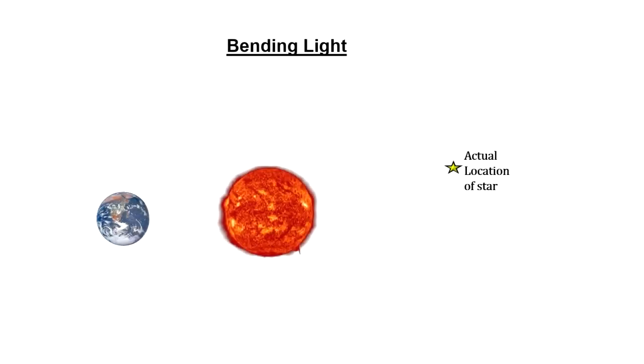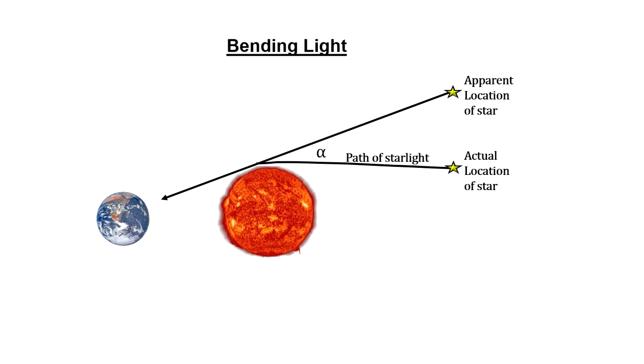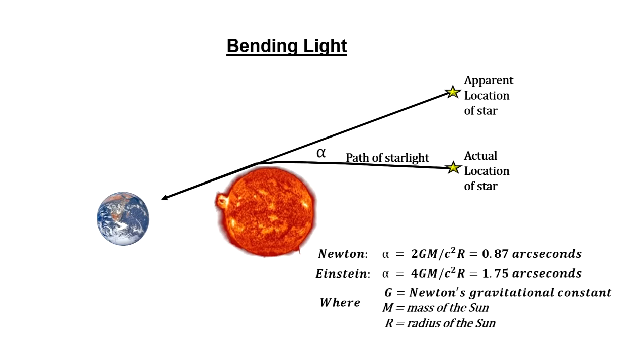When light comes close to the Sun, the Sun's gravity bends it inward. This makes the star look like it's further away from the Sun in the sky than it really is. Both Einstein's and Newton's gravitational theories predicted this. But the theories predicted different values for the amount light would bend.